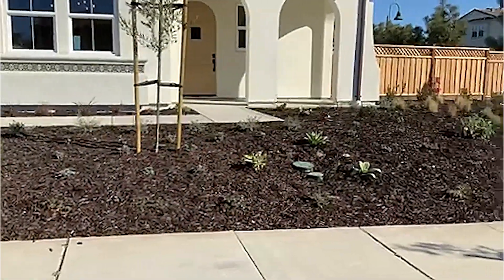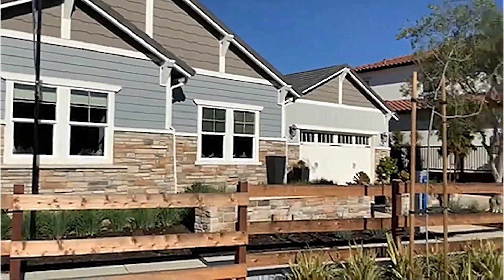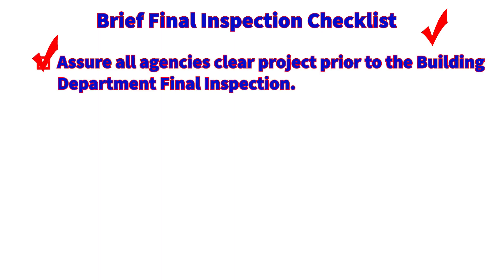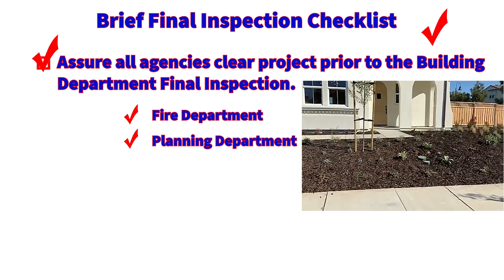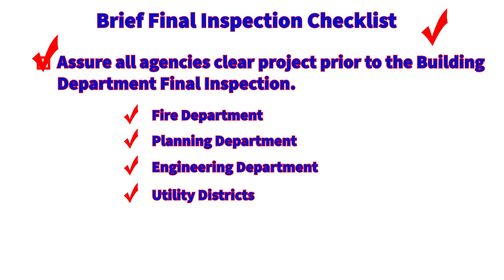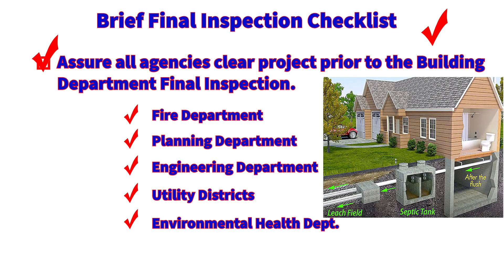The final inspection occurs after all other applicable inspections have been signed off and all interior and exterior work is complete. However, prior to scheduling the final inspection with the building department, it is important to ensure that all agencies involved have provided final clearances — agencies such as the fire department for fire safety and sprinkler requirements, planning department for landscape and project conditions, engineering department for encroachment permit requirements, utility districts for water and sewer requirements, and health departments if septic systems are installed.